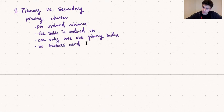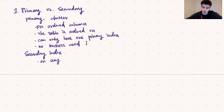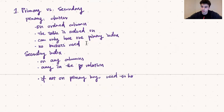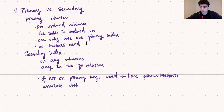The secondary index can be created on any column or any set of columns, whether or not it's a key, and you can have as many as you want. If the secondary index is on a primary key, we don't need pointer buckets. However, we will need pointer buckets if there is potential for duplicates in the chosen column. Pointer buckets associate a certain value in the attribute column with all the locations of all the tuples where that value appears — necessary because without ordering, the same value can appear anywhere in the column.